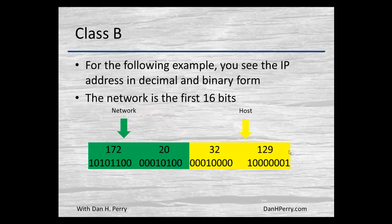We see here that the network portion is the first half — in this case 172.20 — and the last 16 bits are assigned for the host.